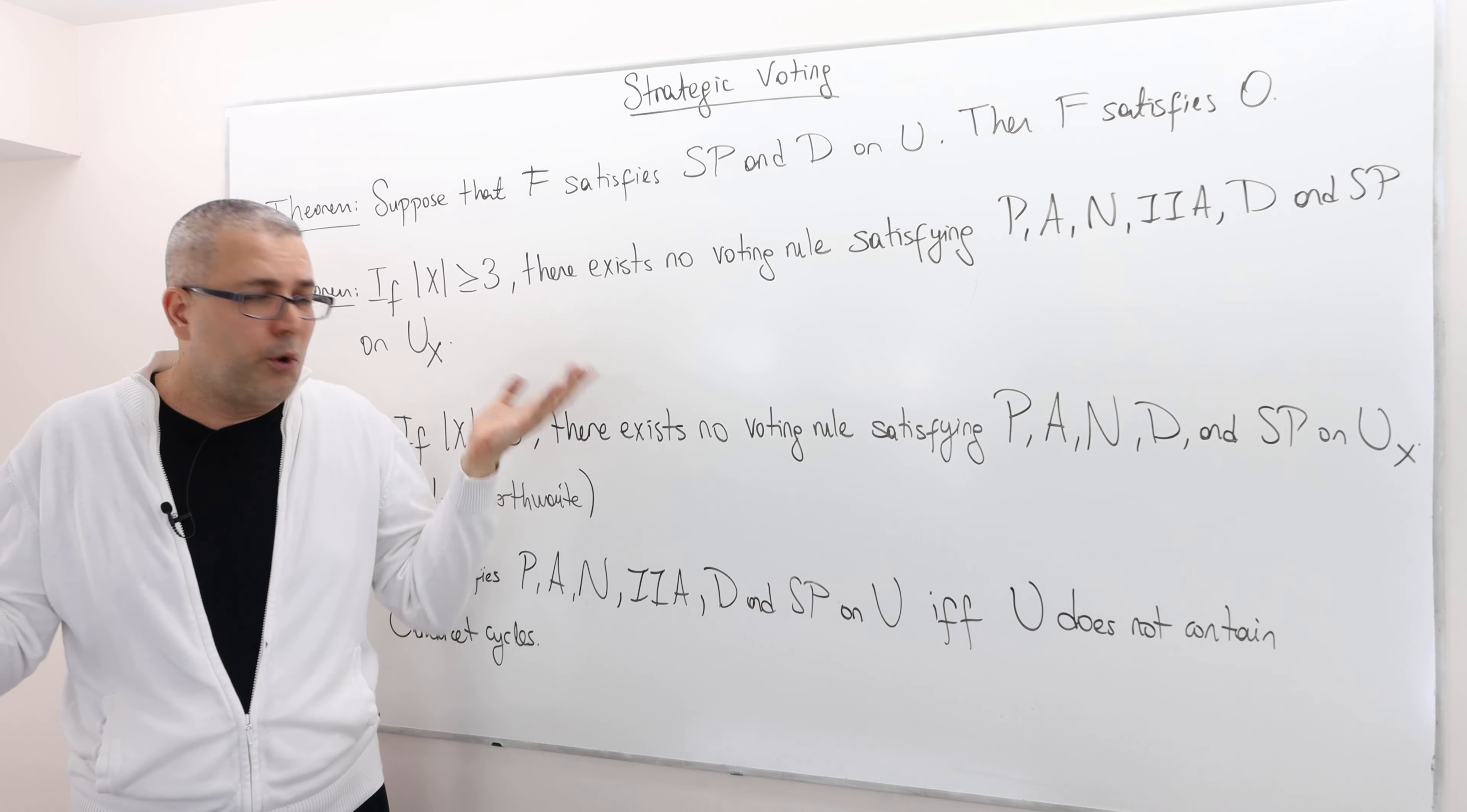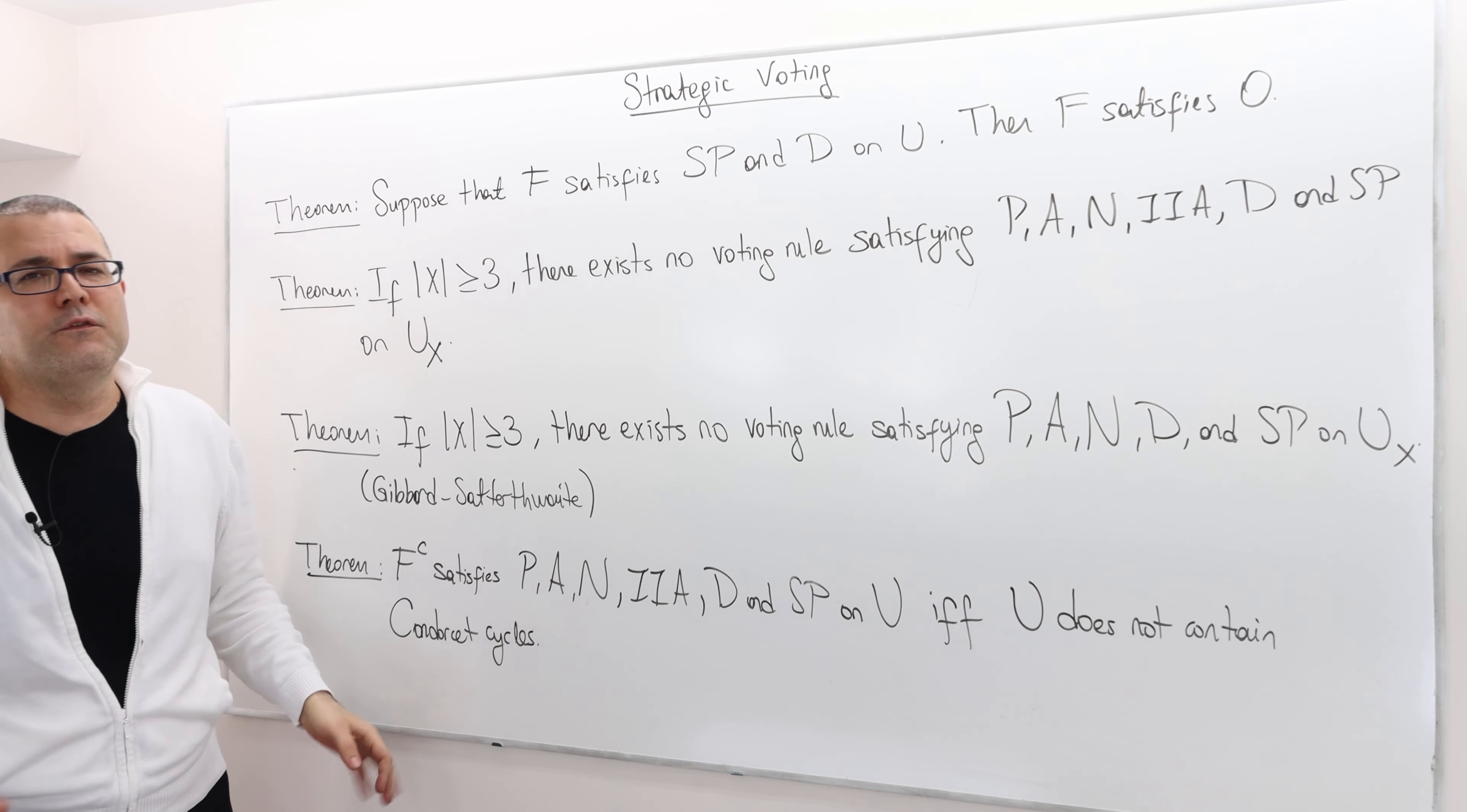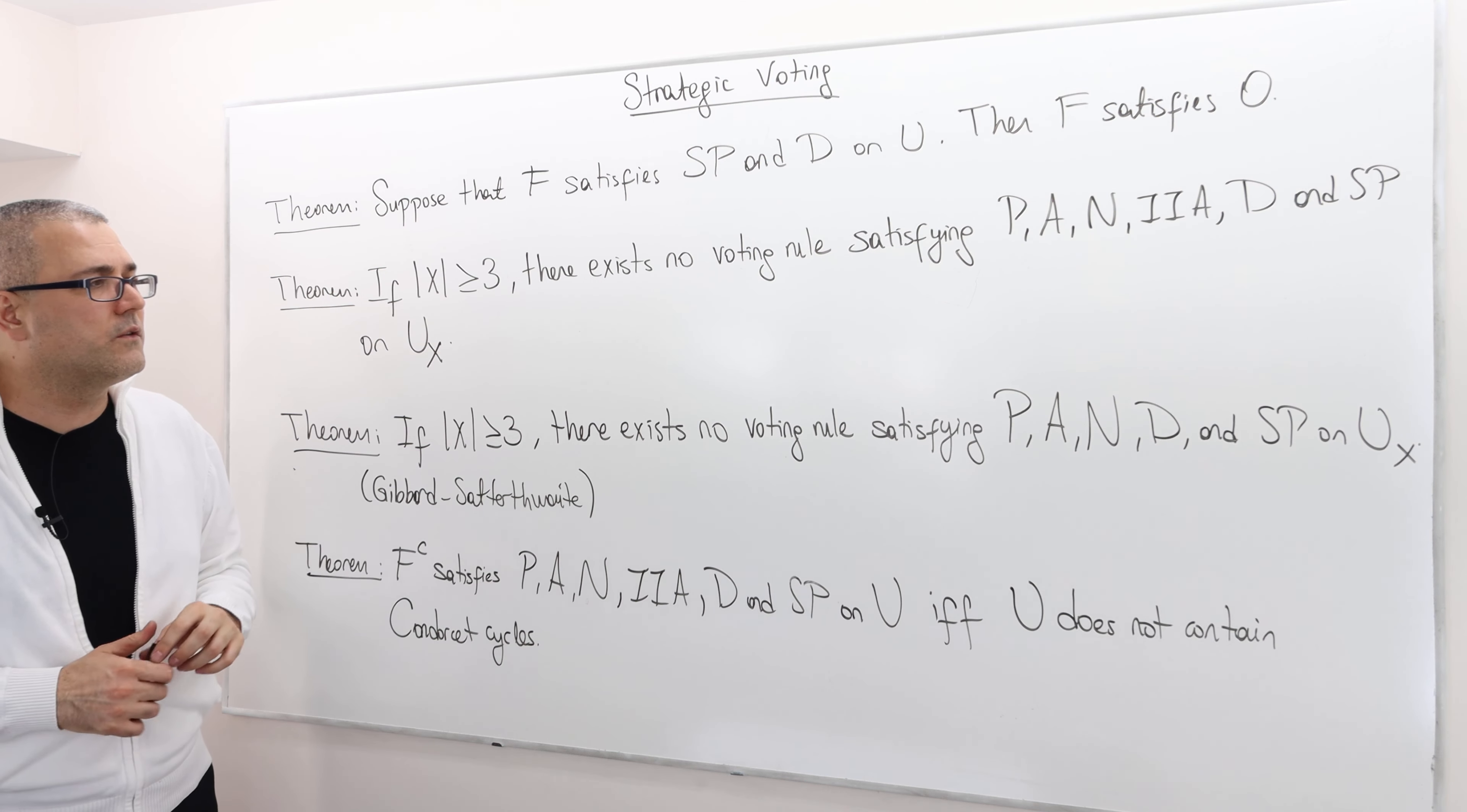Oh, well, perfect. So again, obviously the question is what type of domains include Condorcet cycles and what type of domains do not? That's, you know, that's not what we are going to talk about.